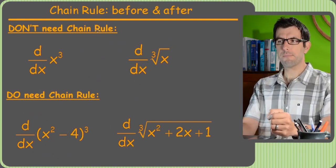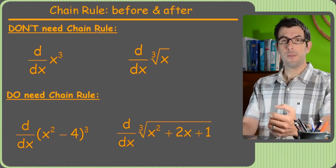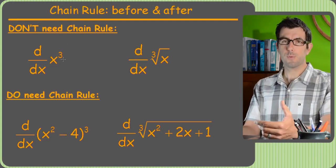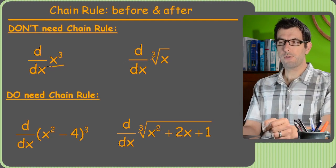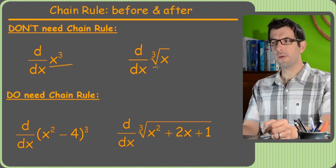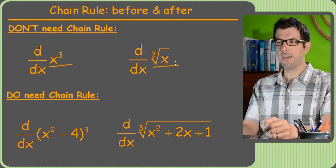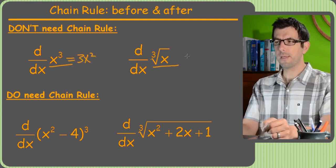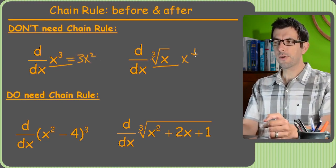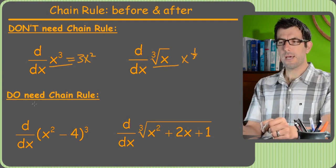Alright so here's some power rule problems with the chain rule and without. Before, these are the problems we worked in the derivative of power rules video. You can take the derivative of x cubed, the derivative of cube root of x. This would have been 3x squared and this would have been we converted to x to the one third. You've seen that in the video.